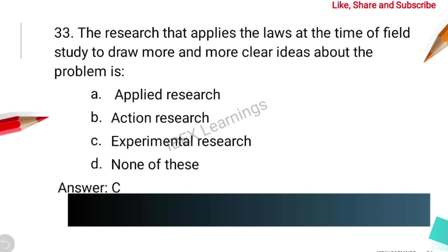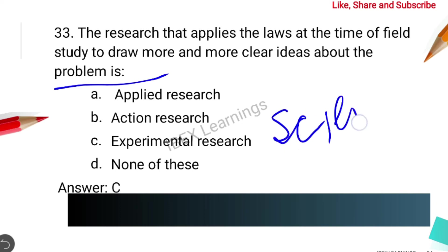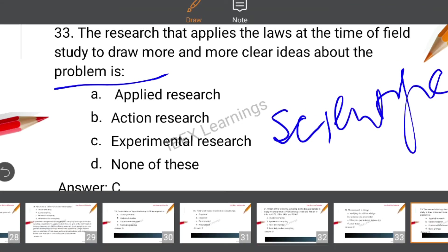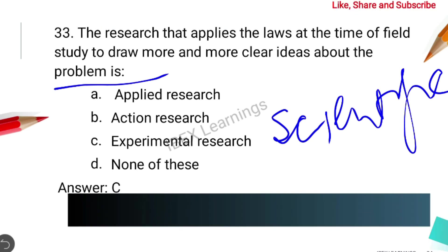The next question describes research that applies laws at the time of field study to draw more and more clear ideas about the problem. This is basically experimental research, because experimental research is a scientific approach where one or more independent variables are manipulated and applied to one or more dependent variables to measure their effect.